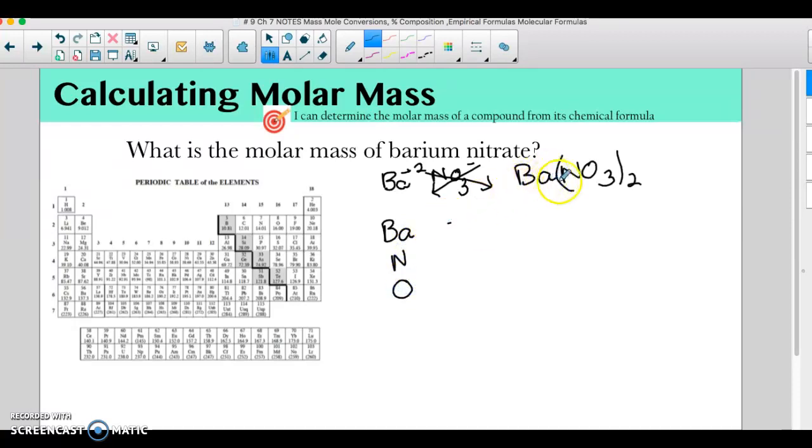So in this formula there's 1 barium. This 2 is really a 1. It gets distributed to everything in parentheses. So there's 2 nitrogens, and then 2 times 3 is 6 oxygens.